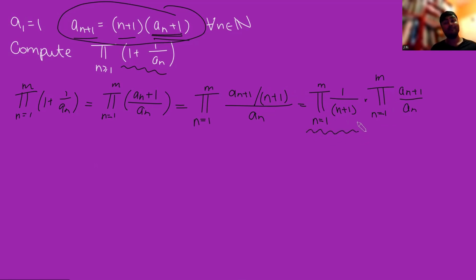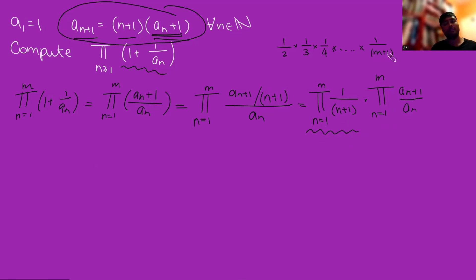Let's deal with the first product: 1/(n+1), multiplying from n=1 to m. The first term is 1/2, the second is 1/3, the third is 1/4, and so on, all the way up to 1/(m+1). So this is clearly 1/(m+1) factorial.